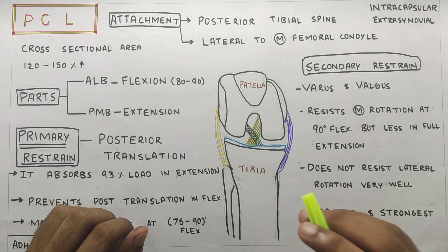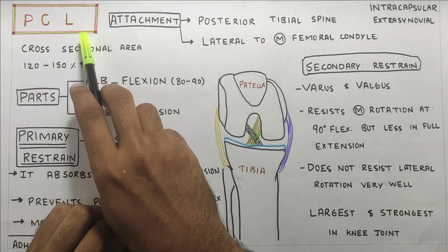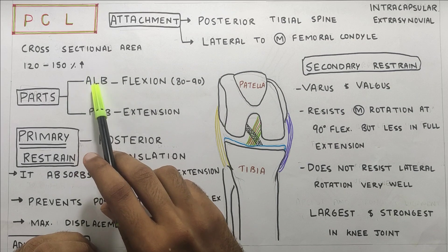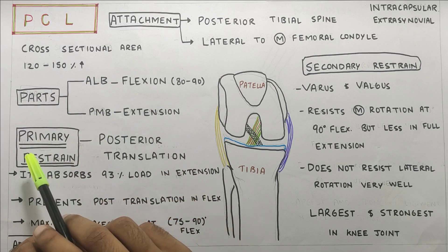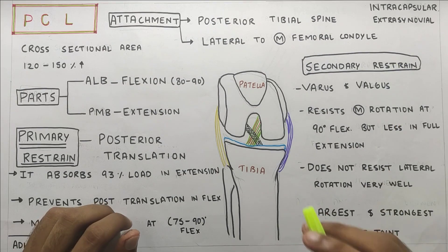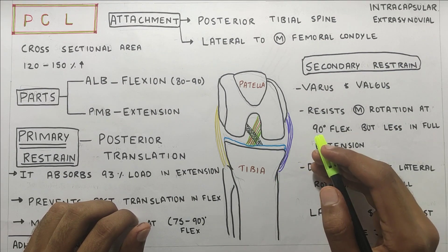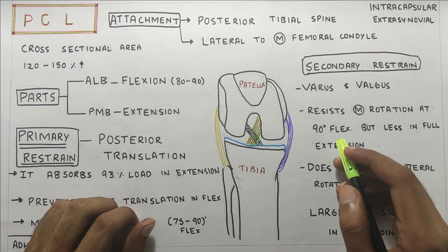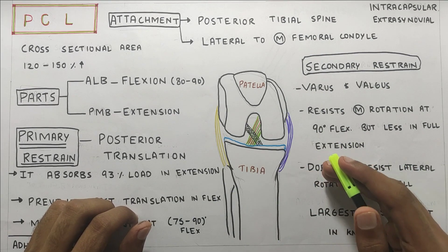In this video, we are going to talk about PCL — its attachments, parts, i.e. the anterolateral band and posterior medial band, primary restraint and secondary restraint. We will also discuss the active structures that prevent and cause posterior translation of the tibia and their application in designing the treatment.